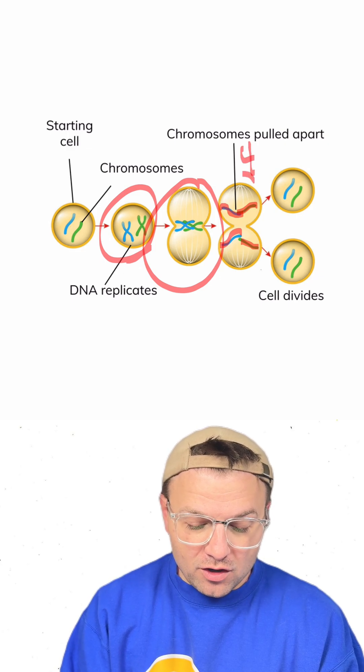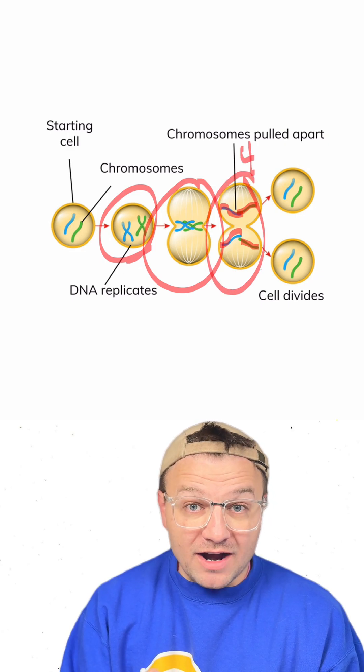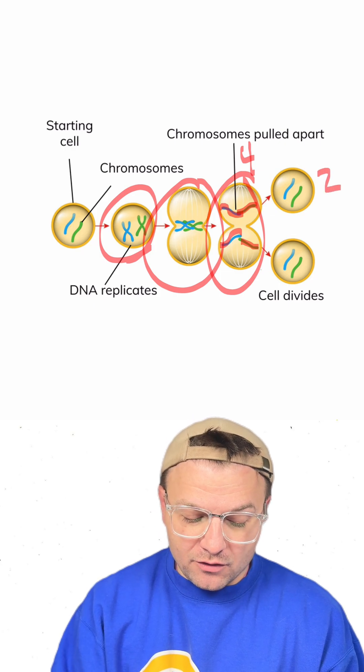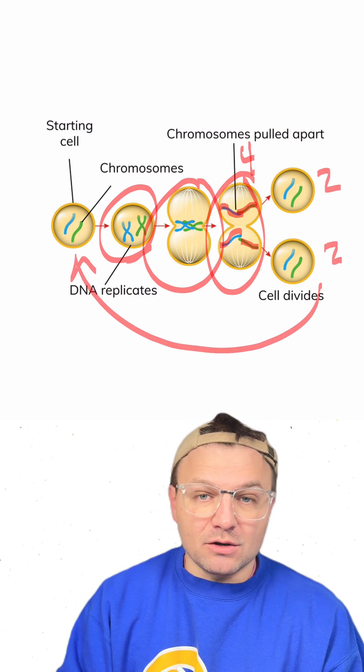So in this case, there are four chromosomes in this cell. However, after it splits, there are going to be two like the original cell.